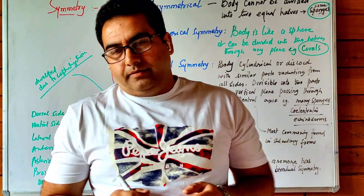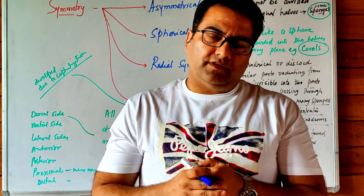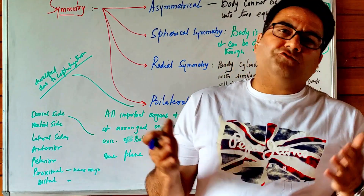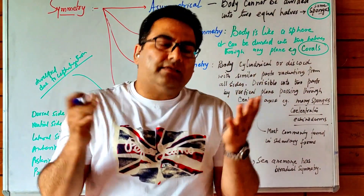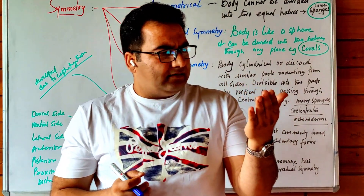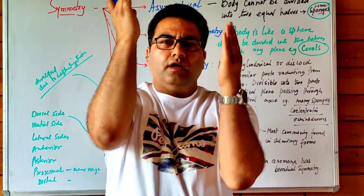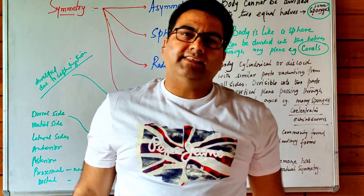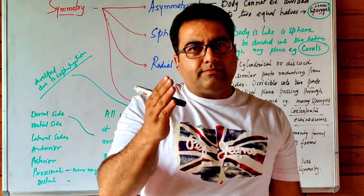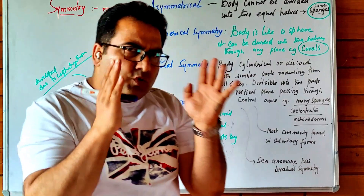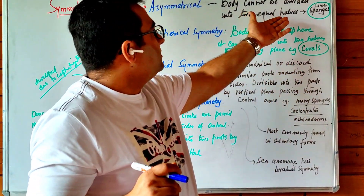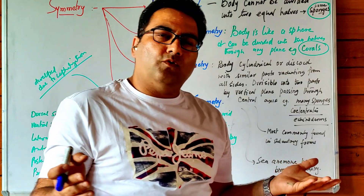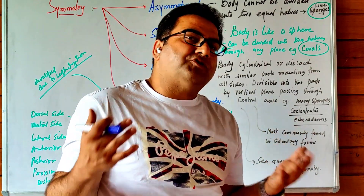Next we shall deal with symmetry — the arrangement of body parts on opposite sides. If the parts are equal in size and shape, that is symmetry; if unequal, that is asymmetry. On the basis of symmetry, organisms can be divided as asymmetrical, where the body cannot be divided into two equal parts. Some sponges are asymmetrical.